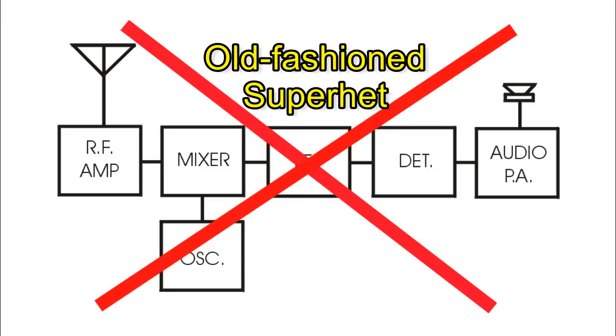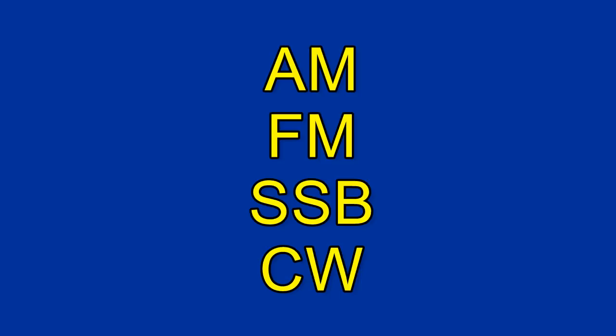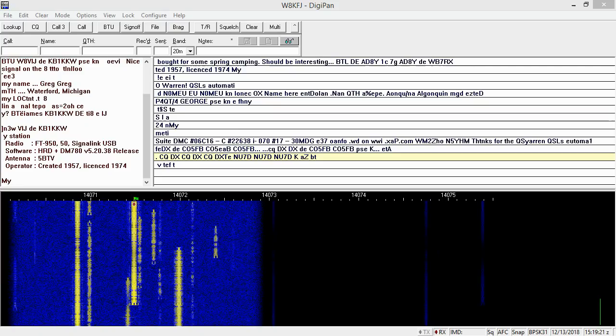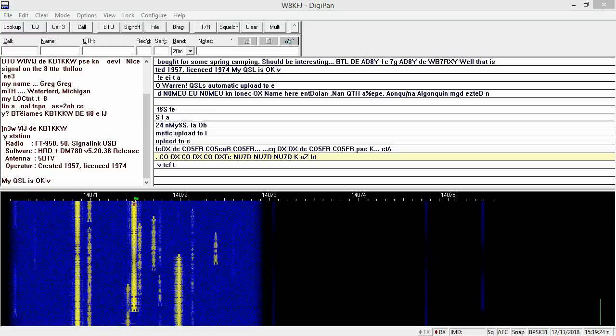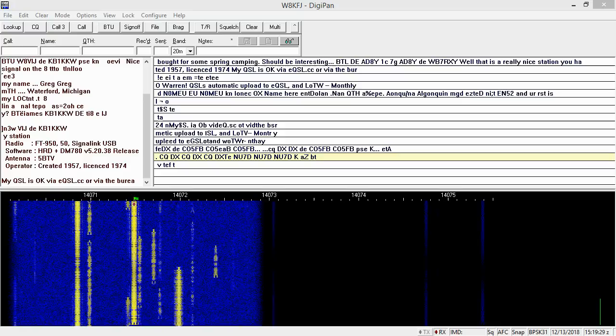While the units have changed, SDRs are fully compatible with the aging superhet, and with existing modes like AM, FM, sideband, and CW. And you can use those digital mode programs like FT-8, PSK-31, or slow-scan TV, or whatever, without spending a hundred bucks or so on an interface like SignaLink.